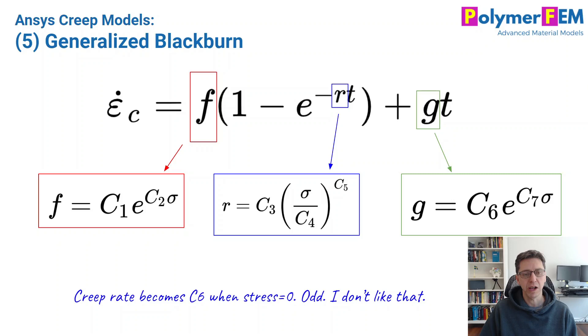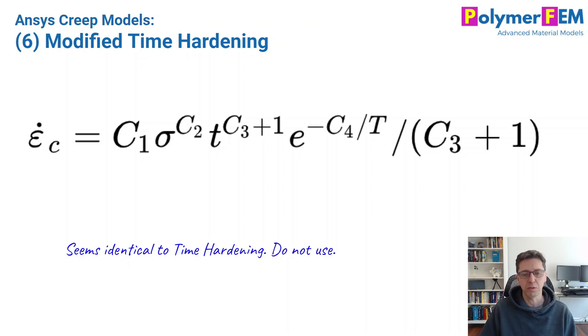Number five is generalized Blackburn. Here is a model that is really odd in my opinion. If you set the stress to be zero, you would expect the strain rate, the creep strain rate to be zero. But that's not the case here. Even at zero stress, you will get a finite creep strain that happens to be equal to C6, one of the parameters. So, okay, that seems a little bit odd. Perhaps it works at other conditions, but it's not super generic in my opinion or general in that you get a non-zero creep rate at zero stress. That seems not to be good enough for me.